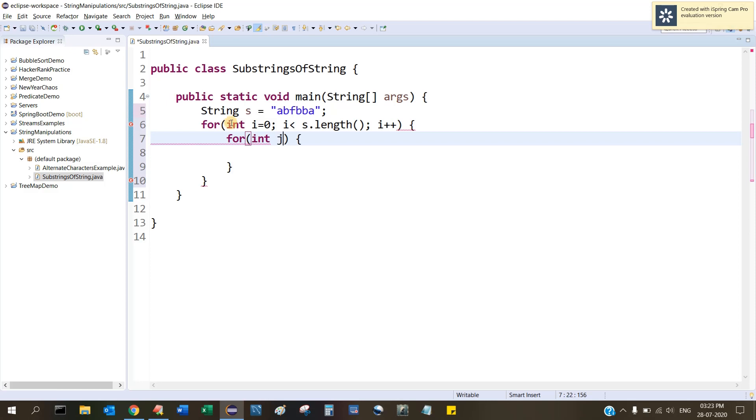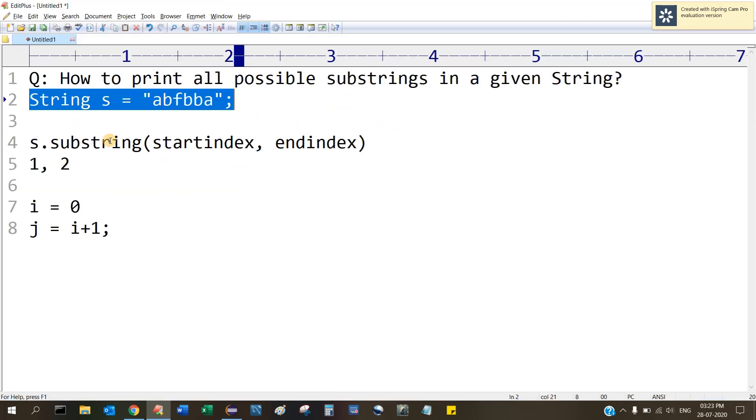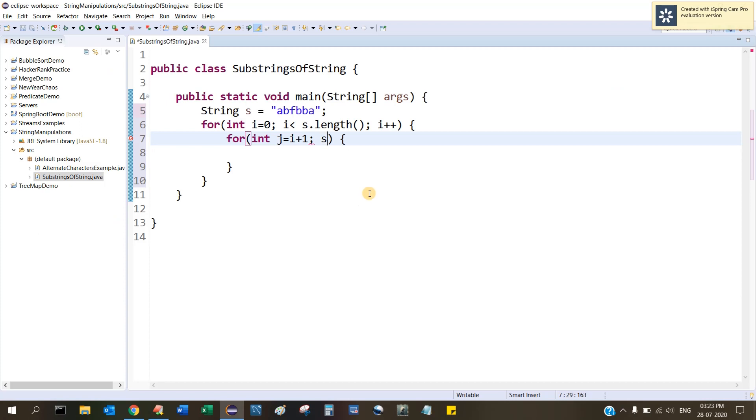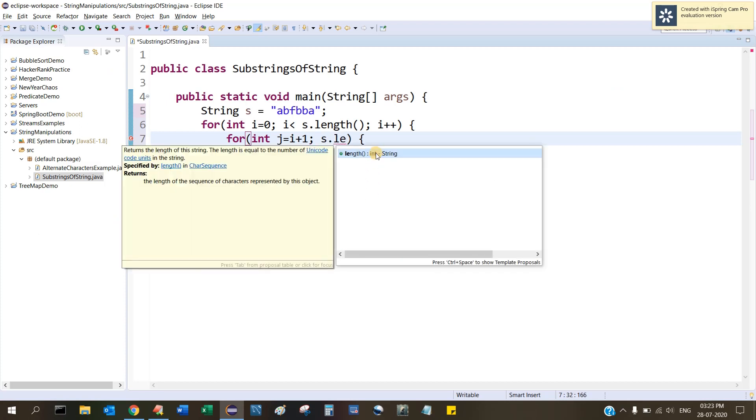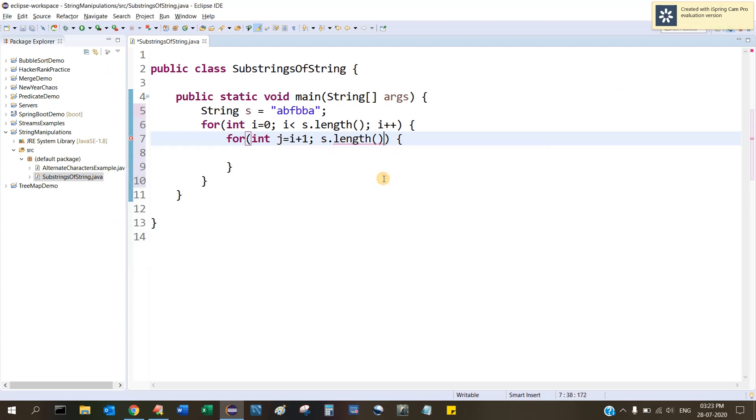And I need one more for loop for j. As I said, it would be i plus 1, then s.length. And j less than equal to s.length, and we have j plus plus.